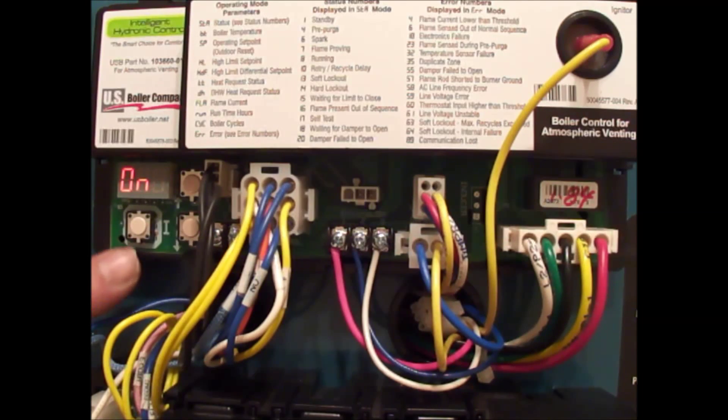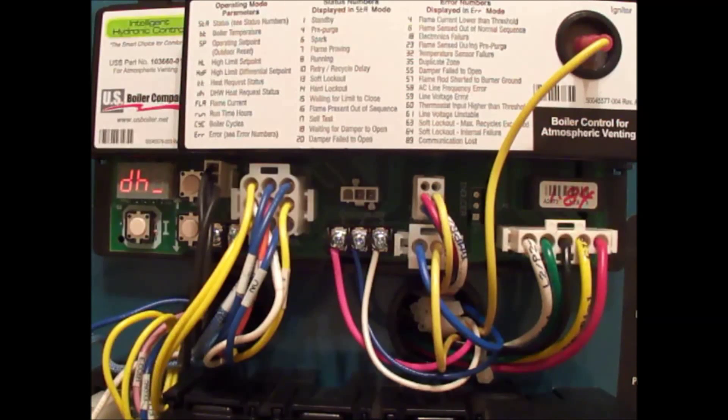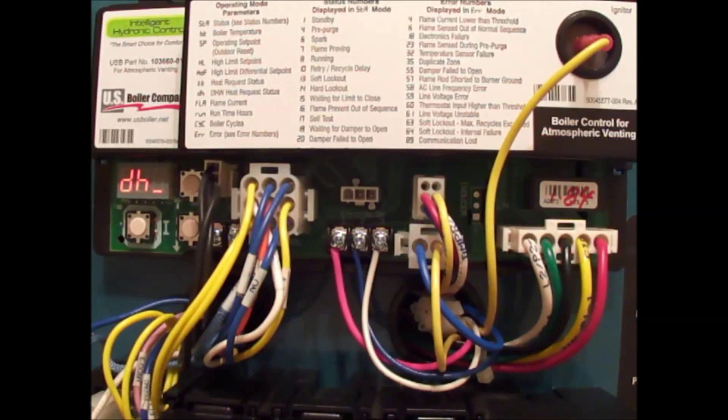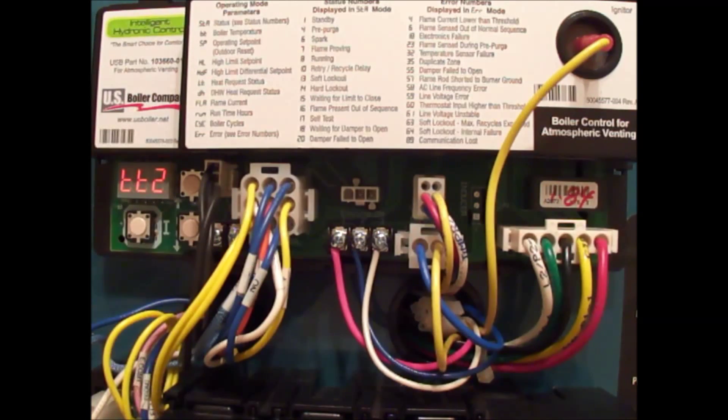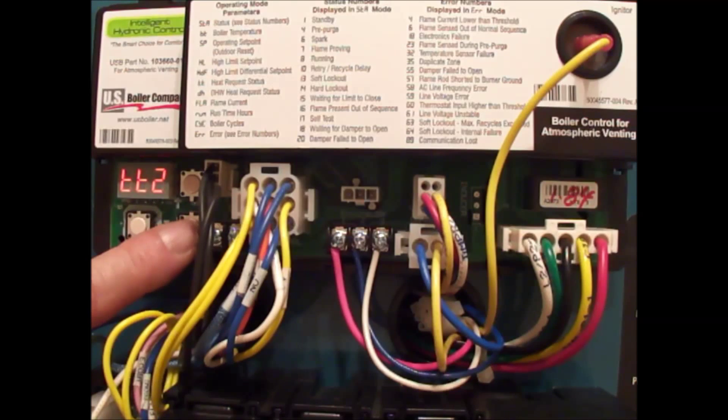If you make this second zone instead of domestic hot water, if you make it heat, it ignores priority. We can change that to domestic hot water or TT2. TT2 is your second zone of heat. This control can do two inputs—it can be two heat zones, or one heat zone and one domestic hot water. If we leave it in DH then it would not ignore priority and it would shut down the heating pump.